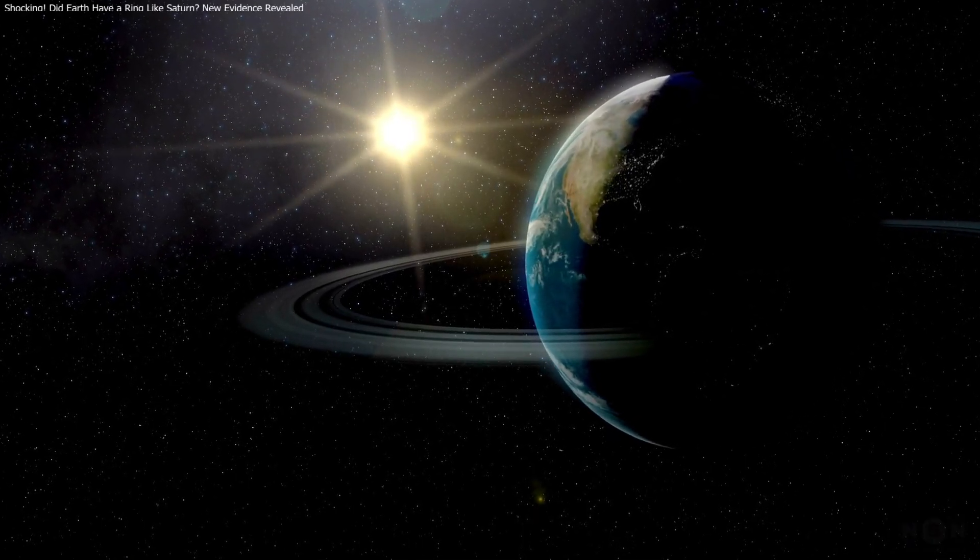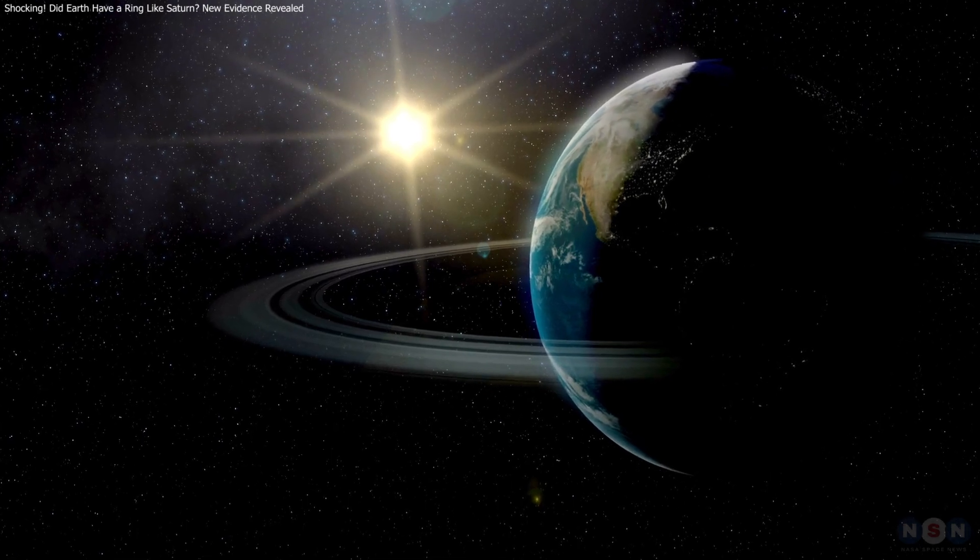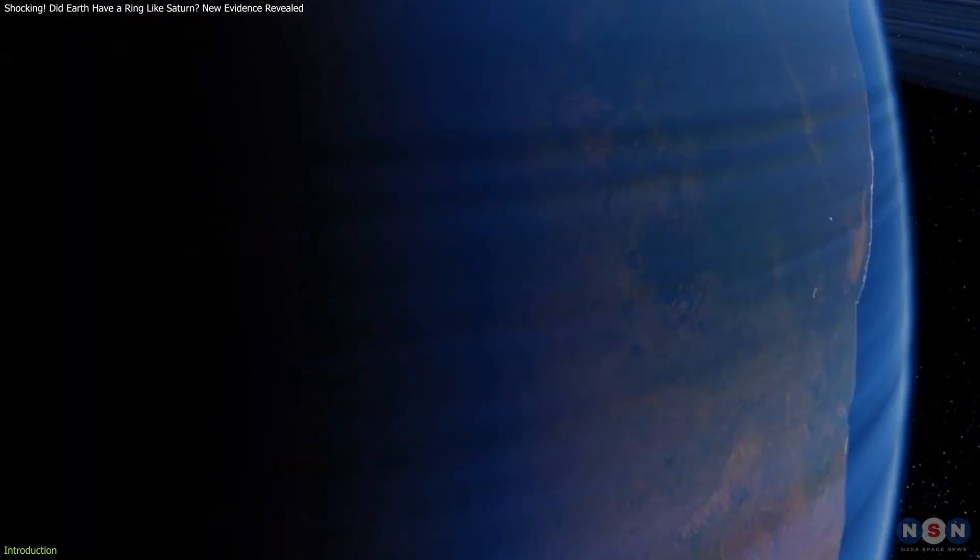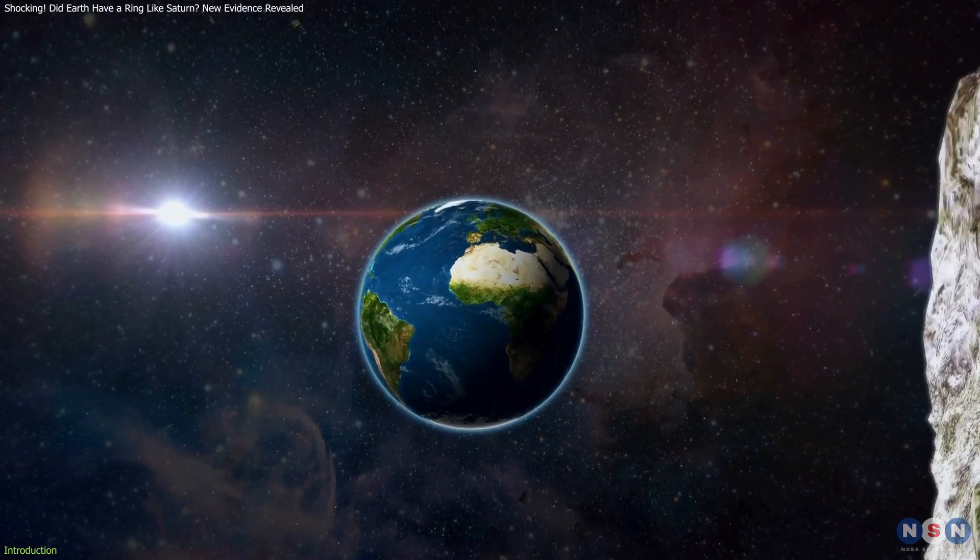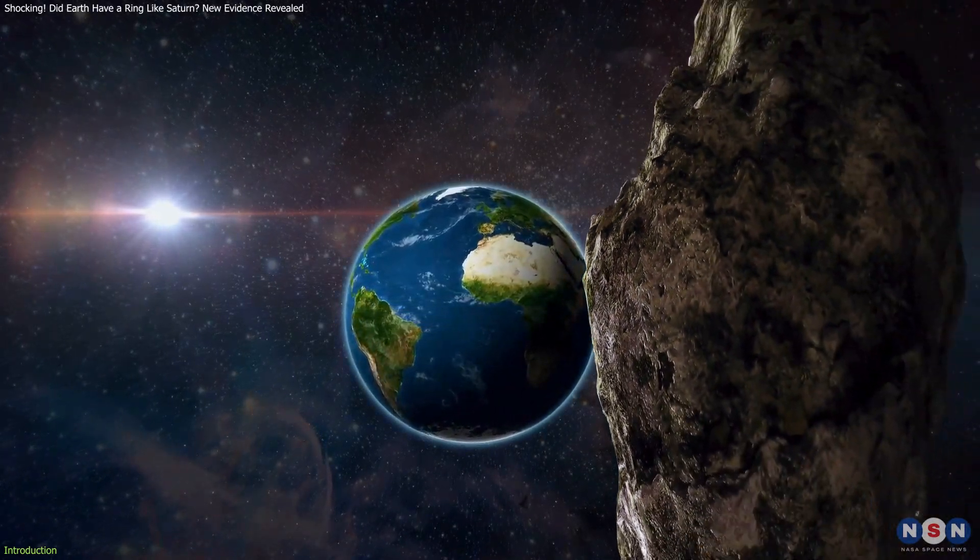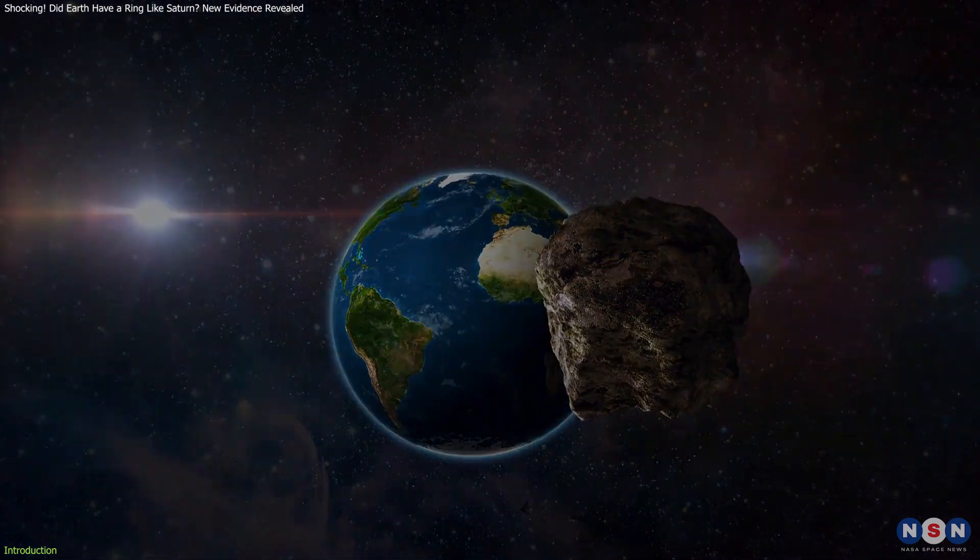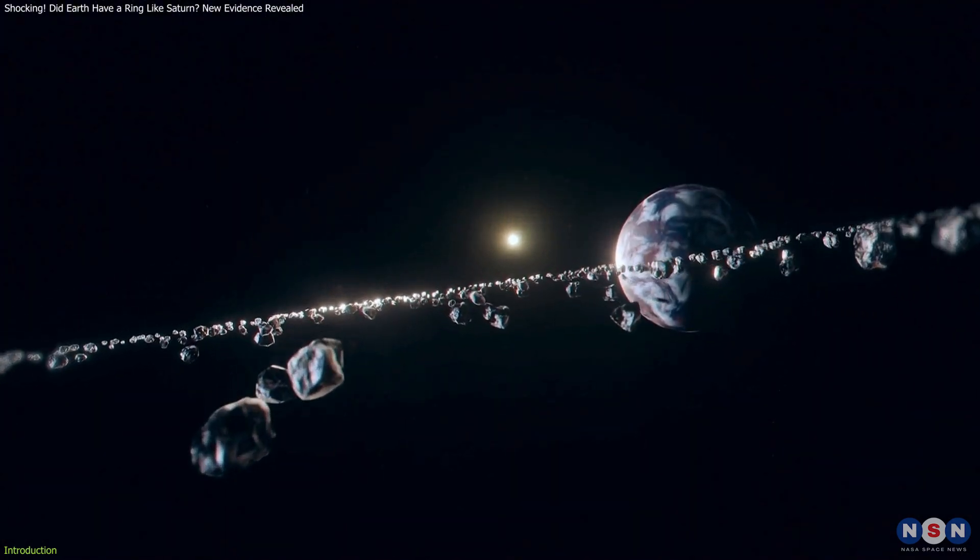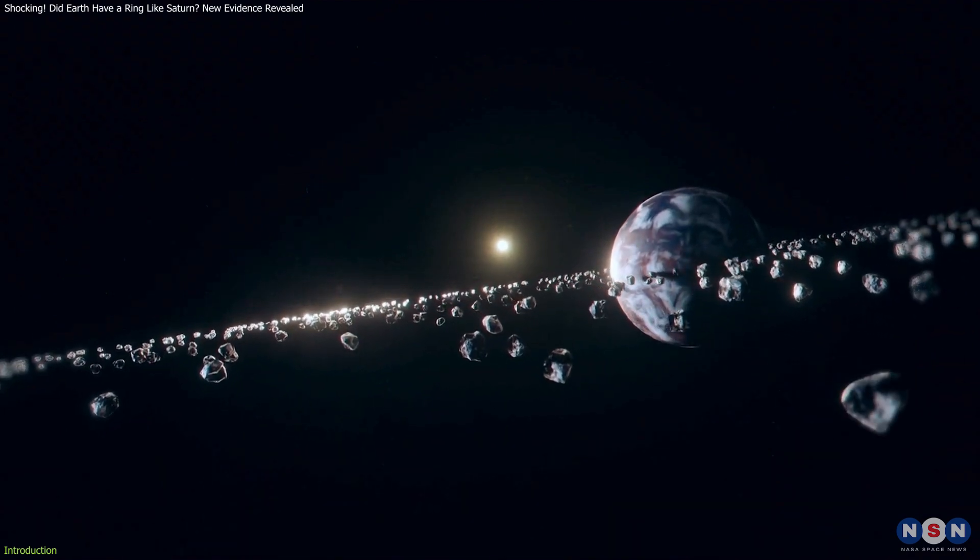A new study suggests that Earth may have once had a ring of debris orbiting it, potentially casting a shadow and altering its climate. Around 466 million years ago, after a near miss with a massive asteroid, Earth could have developed a temporary ring system similar to Saturn's, lasting for tens of millions of years.